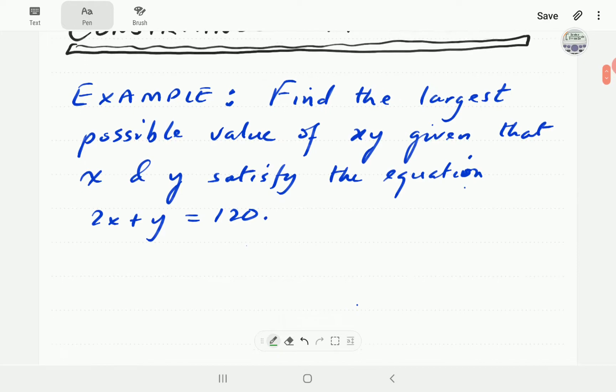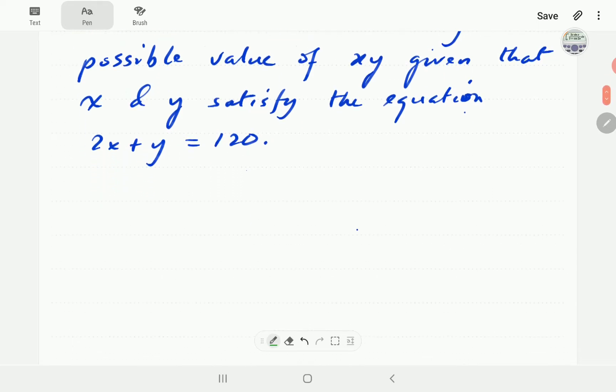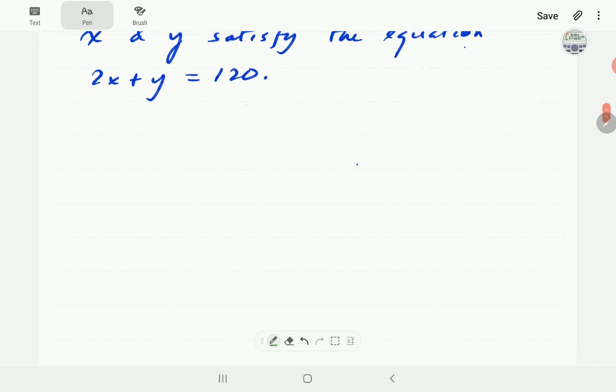I'm going to introduce this by way of an example. In this example, we want to find the largest possible value of the product x times y given that x and y satisfy this equation of a straight line.